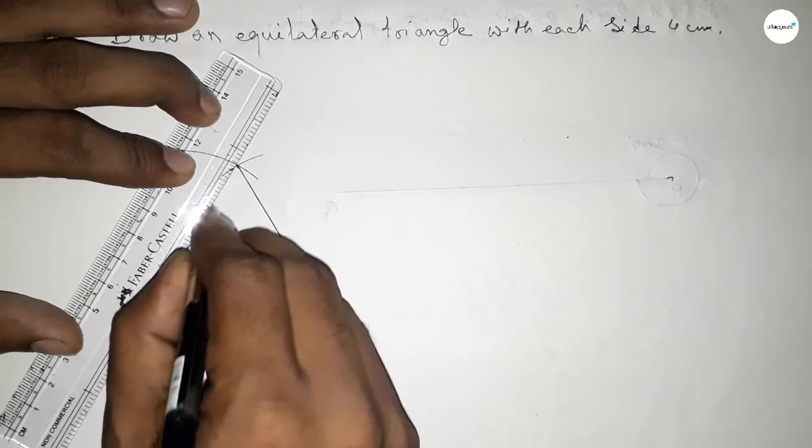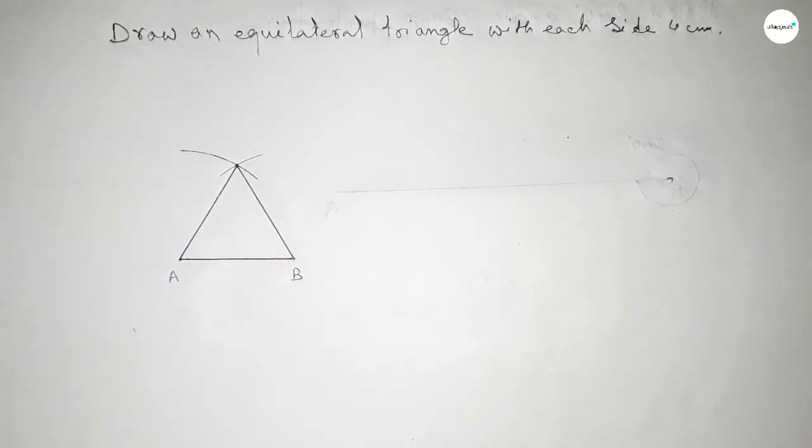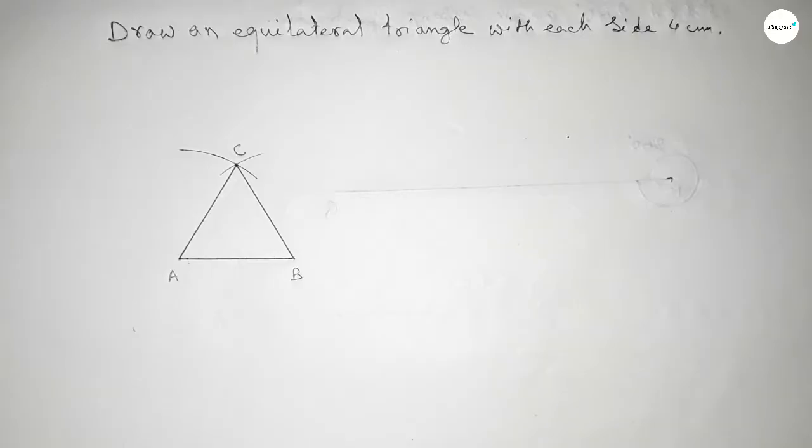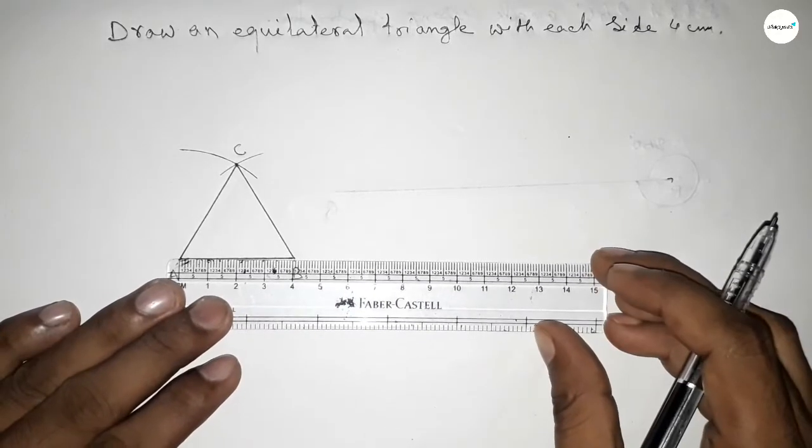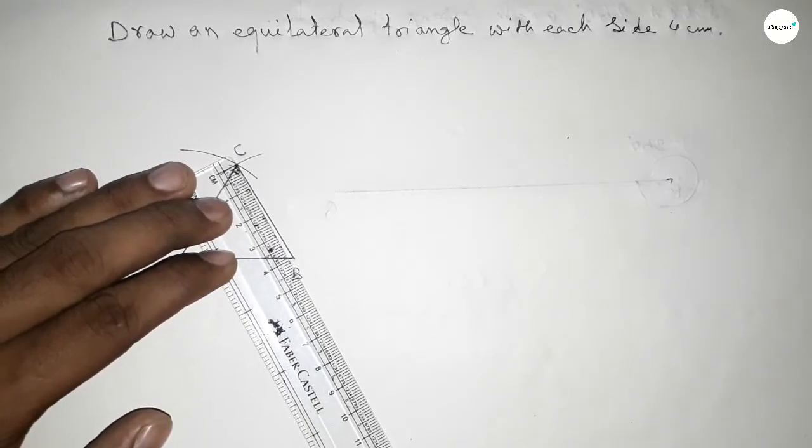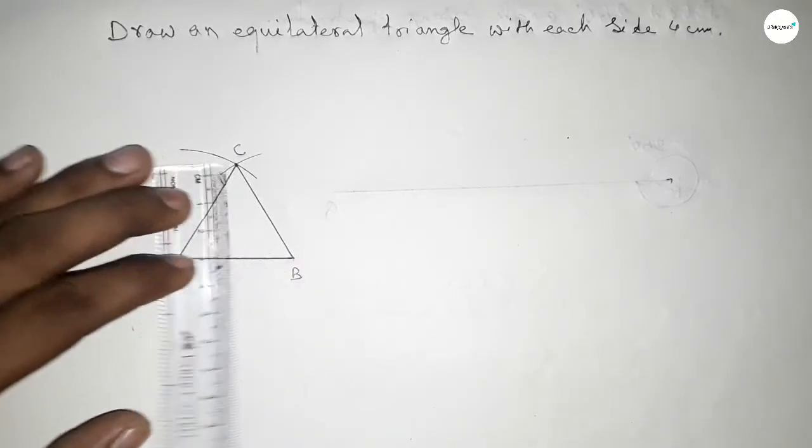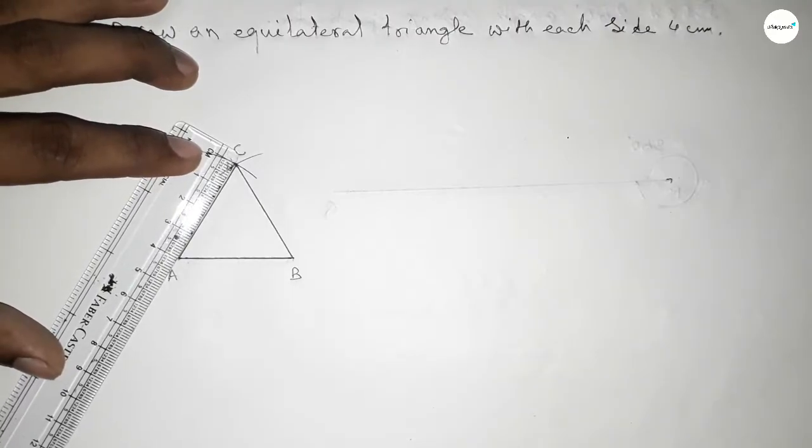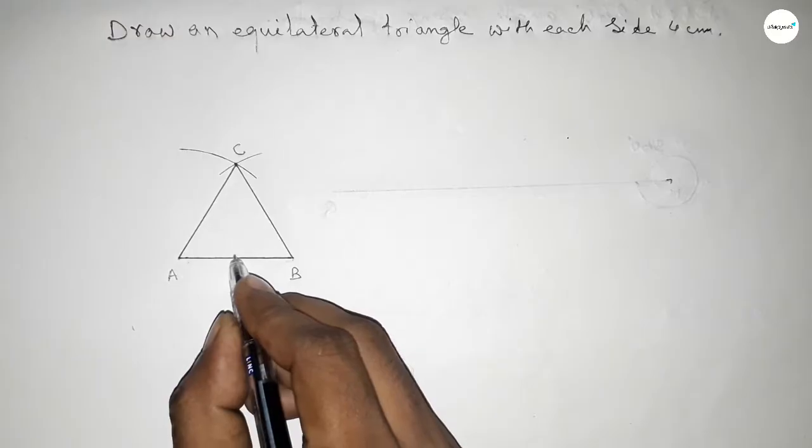Checking the sides - this is 4 centimeters, this is also 4 centimeters, and this is also 4 centimeters. All the sides are equal. Now marking equal sides on the triangle.